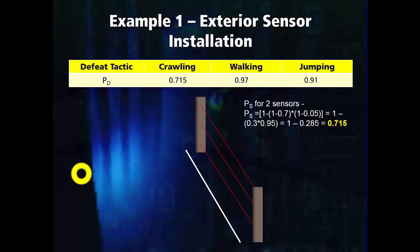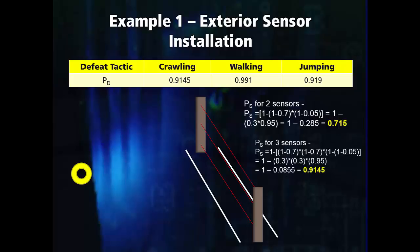As a result, we need to add another sensor. Because our weakness is against a crawling adversary, we should add an additional coaxial cable. With a second coaxial cable, we now have a detection probability of over 91%. The calculation for this is shown on the slide.